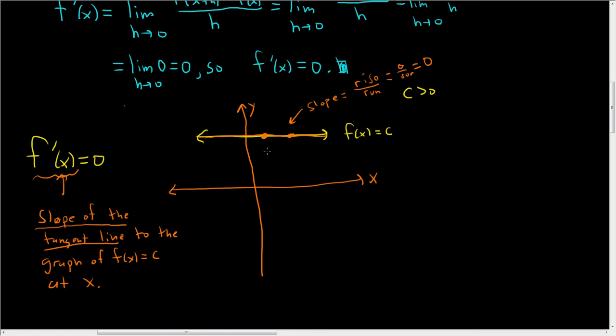Since the derivative is zero it makes sense, because the derivative is supposed to be the slope of the function. So I hope that helped.